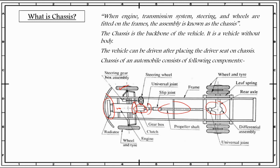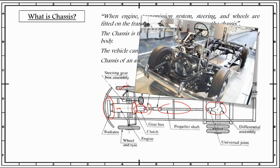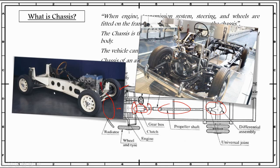Thus we can say that the chassis contains all the major units necessary to propel the vehicle, so the vehicle can be driven after placing the driver seat on the chassis. An example of a chassis is shown here. As we can see in this figure, if you can somehow place a driver seat over here, you can actually drive this whole car. Another example of a chassis is over here — this is a frame with all the different components placed on it. Chassis is a French term which was initially used to denote the frame or main structure of a vehicle. It is now extensively used to denote the complete vehicle except the body, for heavy vehicles with separate body, and for light vehicles of mono-construction type having body integral with frame.